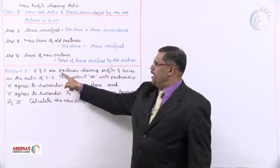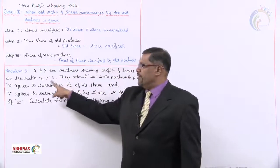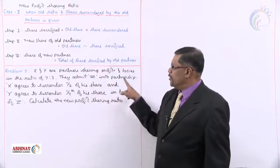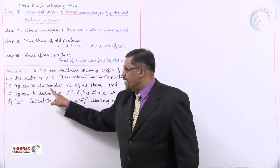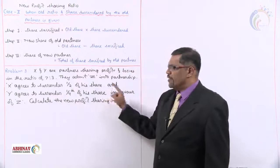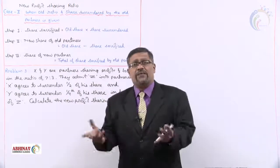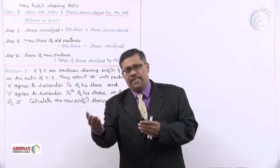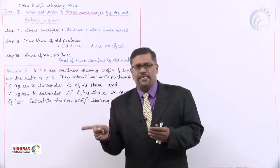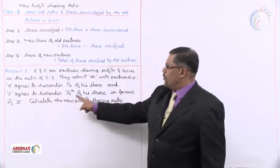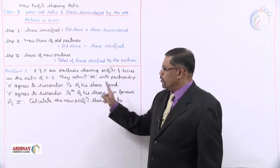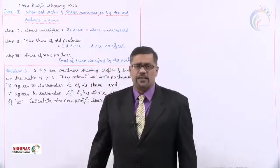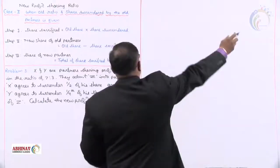X and Y are partners sharing profits and losses in the ratio of 7 to 3 (old ratio). They admit Z into the partnership. X agrees to surrender half of his share and Y agrees to surrender one fourth of his share, both in favor of Z. The new partner's share is not mentioned. Calculate the new profit sharing ratio using the three steps.